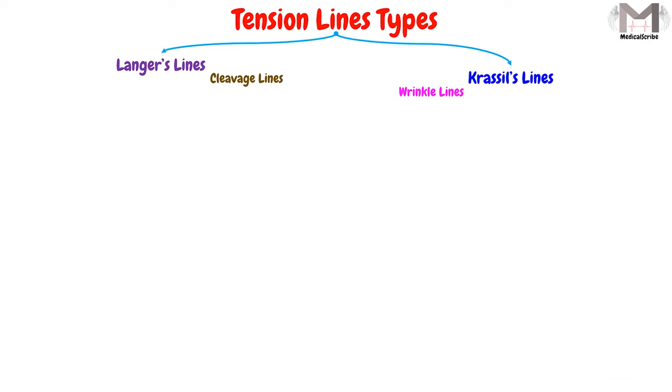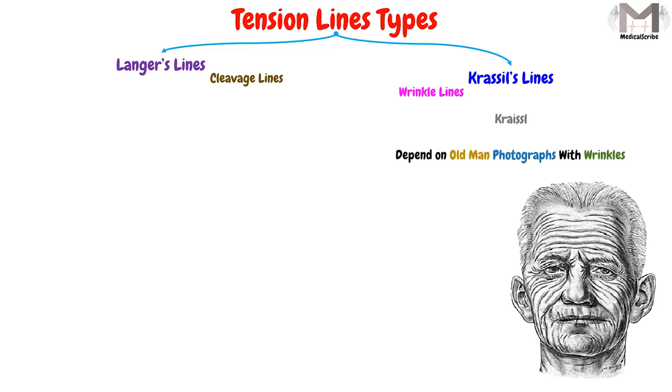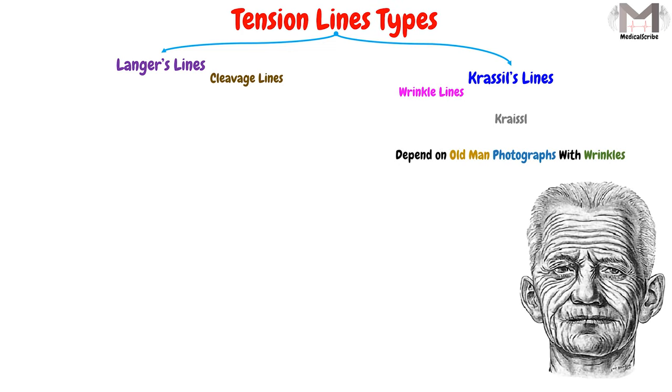While the Kraissl's lines, or the wrinkle lines, which is the second type of skin lines, these lines were described by Kraissl, depending on photographs of an old man with wrinkles. So, they usually coincide with the wrinkle lines, but not always of course.